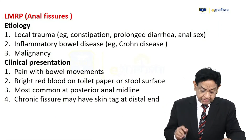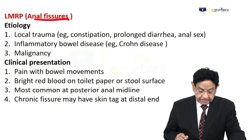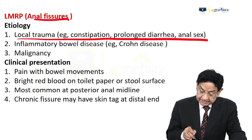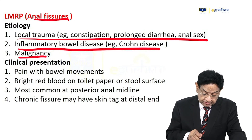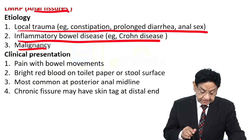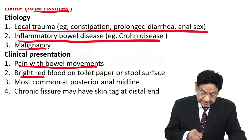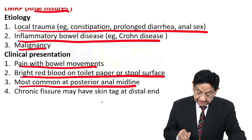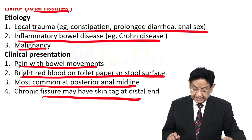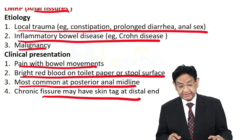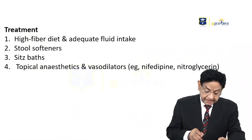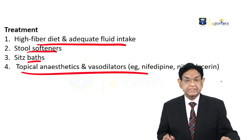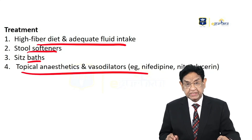A brief summary of anal fissures: Etiology includes local trauma, constipation, prolonged diarrhea, anal sex, inflammatory bowel disease, Crohn's disease, or malignancy. Clinical presentation includes pain with bowel movement and bright red blood on toilet paper or stool surface. Most common location is the posterior anal midline. Chronic fissure may have a skin tag at the distal end. Treatment: high fiber diet, adequate fluid intake, stool softener, sitz bath, topical anesthesia, and vasodilators like nifedipine and nitroglycerin.